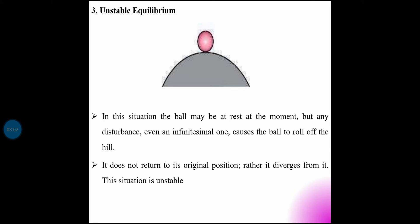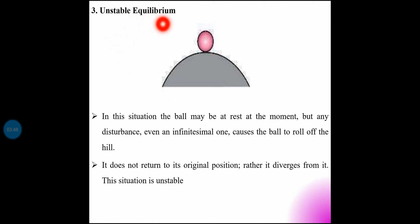Unstable equilibrium: if you have a plate or hill and the ball is placed at the top, in this situation the ball may be at rest at the moment, but any disturbance — even an infinitesimally small one — causes the ball to roll off the hill. It does not return to its original position; rather it diverges from it. This situation is unstable equilibrium.